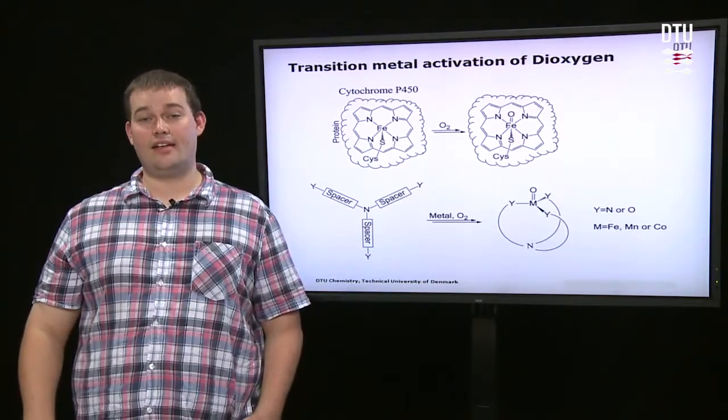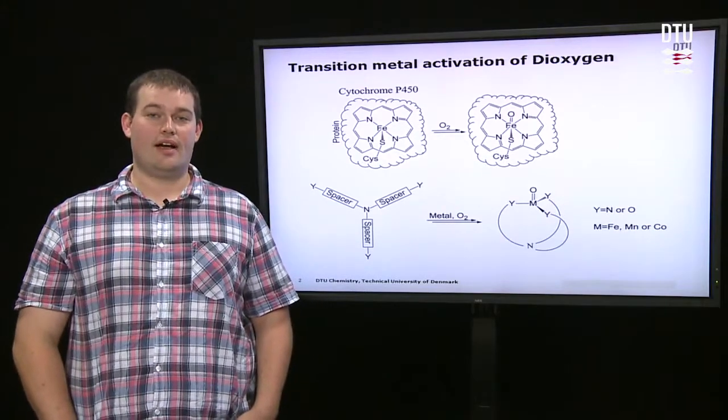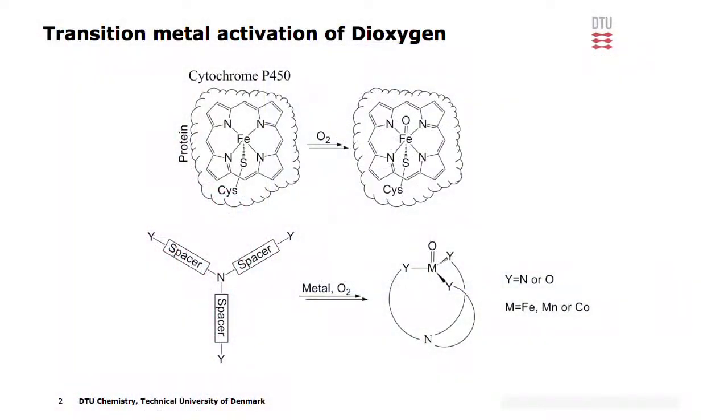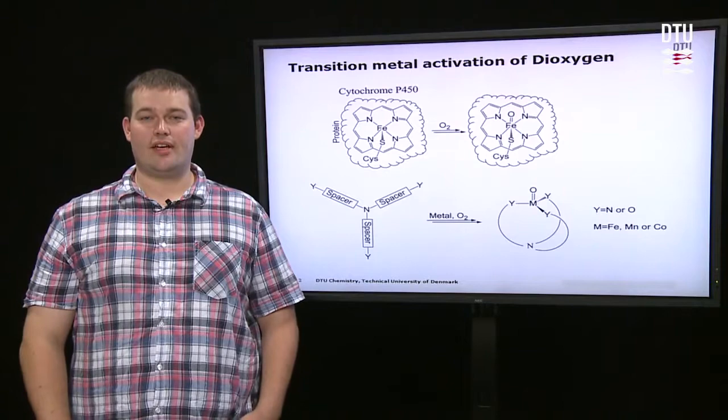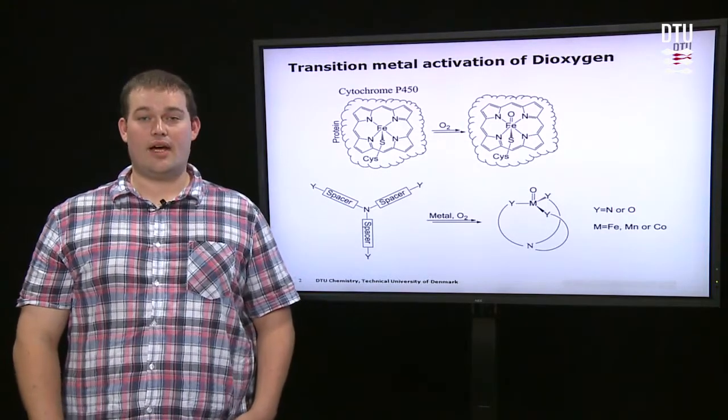In biology, iron and to some extent copper are the preferred metals for this type of activation. One example is the cytochromes, which are used as a family of enzymes which carry out oxidations.